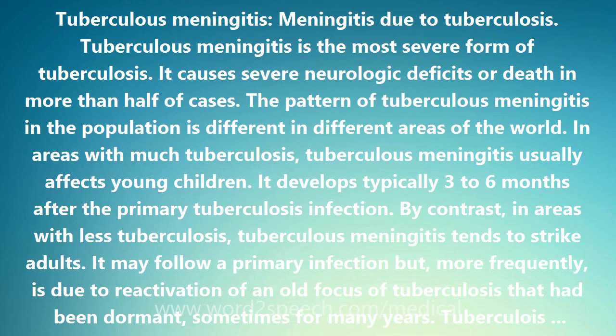A dense gelatinous exudate forms and envelops the brain arteries and cranial nerves. It creates a bottleneck in the flow of the cerebrospinal fluid, which leads to hydrocephalus. The development of arteritis and infarctions of the brain can cause hemiplegia or quadriplegia.